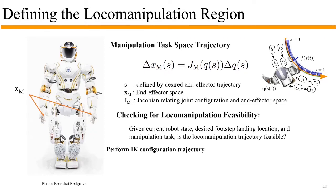With the definitions for locomotion and manipulation constraints, we can now check for loco-manipulation feasibility. Given the current robot state, a desired footstep landing location, and a small delta s along the manipulation trajectory, we can query if the loco-manipulation trajectory is feasible.